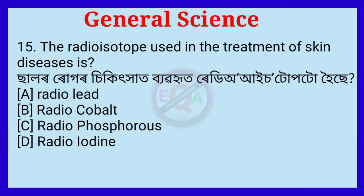Question number fifteen. The radioisotope used in the treatment of skin diseases is? The correct option is Option C: Radio phosphorus.